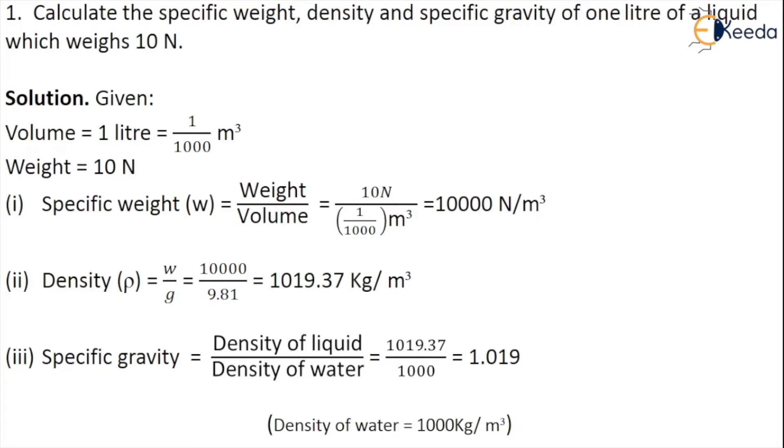We already know that specific weight is denoted by small letter w and it is equal to weight by volume. Then substitute the given value, so 10 by 1 by 1000. After calculation we get specific weight equal to 10,000 newton per meter cube. We know that density is equal to specific weight by g.